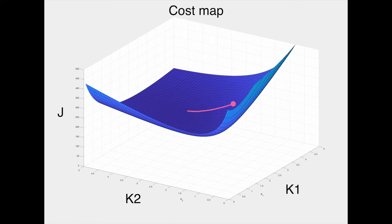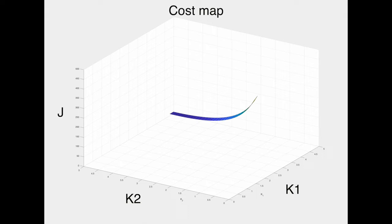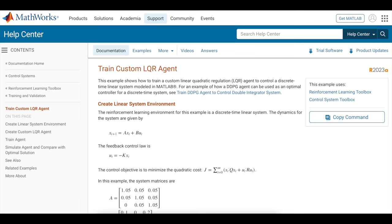And this is kind of like dropping a ball onto our sheet and letting it roll all the way down to the bottom where it comes to rest at the optimal gains. In this way, we don't need to calculate the entire cost surface. We just need to calculate the cost that lies along the trajectory of the descending gradient. And if you're curious about what this looks like in practice, we have an example showing how to solve LQR with reinforcement learning in MATLAB.